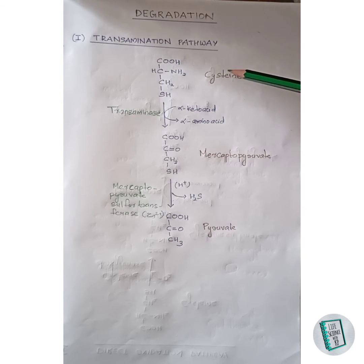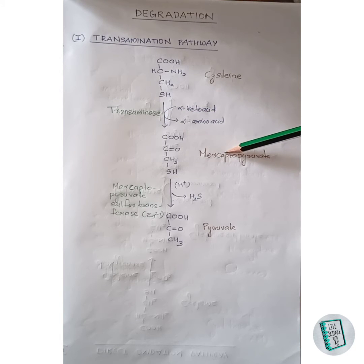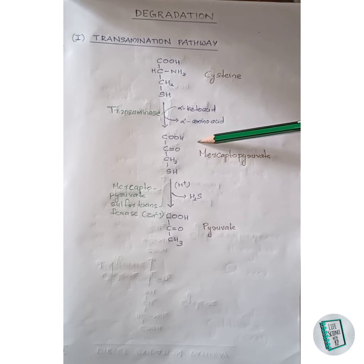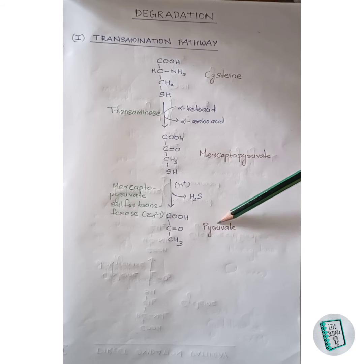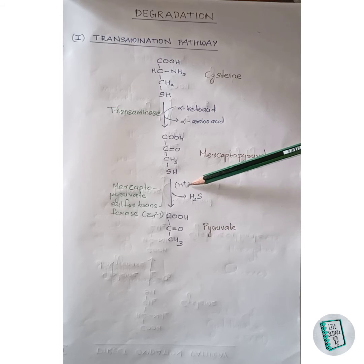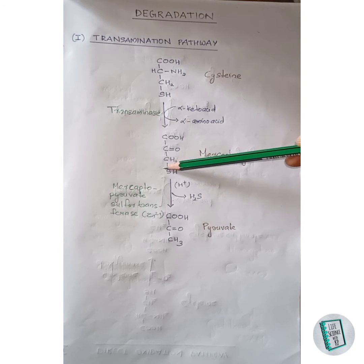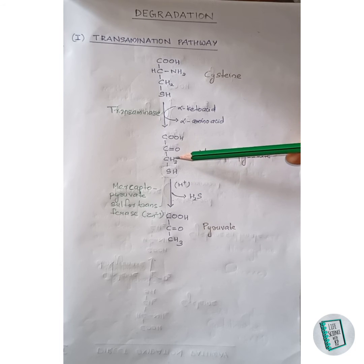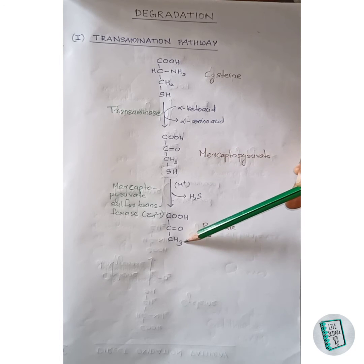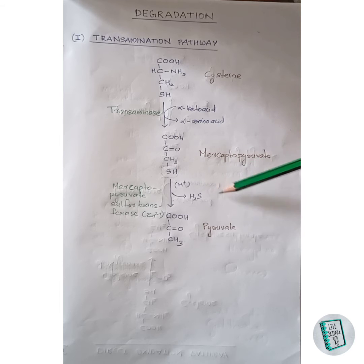In the transamination pathway, cysteine undergoes transamination in the presence of transaminase enzyme and forms mercaptopyruvate. Here, the NH₃ group gets replaced by a keto group, forming mercaptopyruvate. Then, in the presence of mercaptopyruvate sulfur transferase, a pyruvate molecule is formed. Protons are donated by this enzyme, and these protons along with the thiol group are released as H₂S. One of the protons attaches with the CH₂ and forms CH₃, thus forming pyruvate.